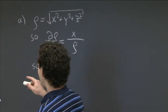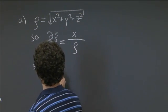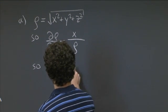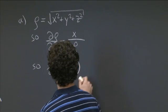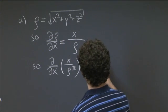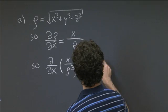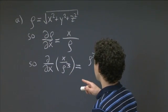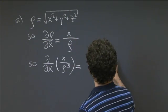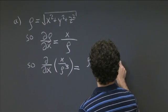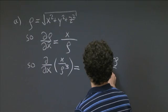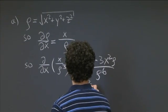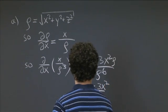So the component of F we want to take the partial of — we want the x partial of the first component of F, that's the x partial of x over rho cubed. Applying the quotient rule: the derivative of the top is rho cubed, minus x times the derivative of the bottom, which is 3 rho squared times x over rho, so that's 3x squared rho, divided by the bottom squared, which is rho to the sixth. There's a common factor of rho we can cancel, giving rho squared minus 3x squared divided by rho to the fifth.